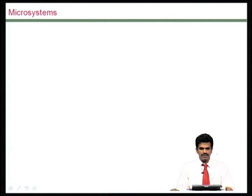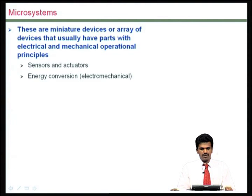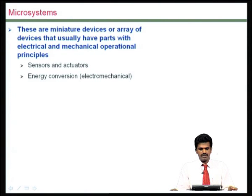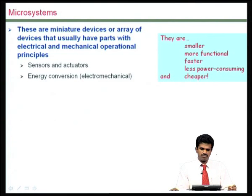Let us start with microsystems. As seen in previous lectures, these are essentially miniature devices or arrays of devices that have electrical and sometimes mechanical parts, operating on electrical and mechanical principles. There could be sensors and actuators, and in most of these there is some kind of energy conversion, which is usually electromechanical. These are smaller, multifunctional devices that are faster, less power consuming, and more importantly, cheaper compared to conventional ones.